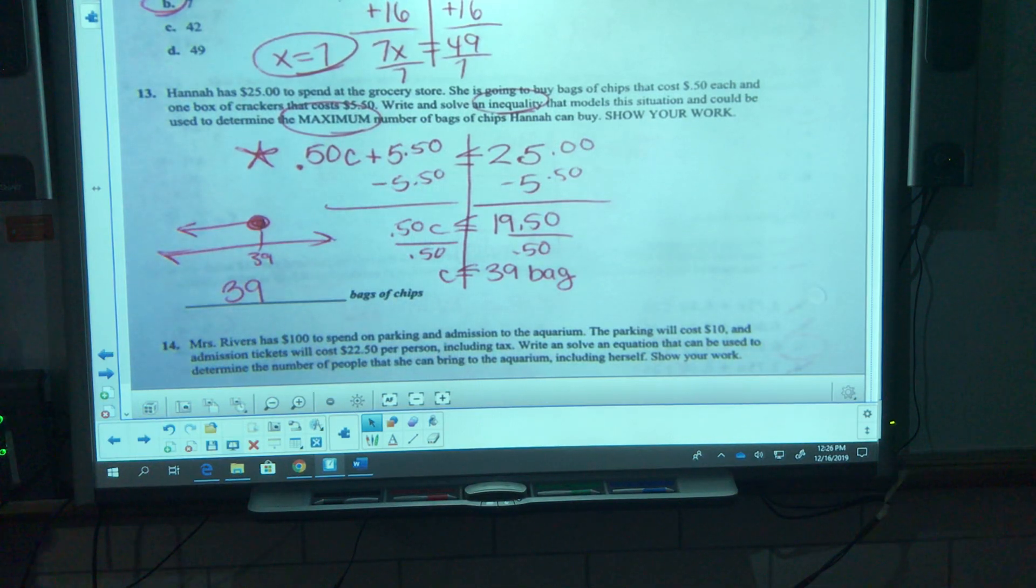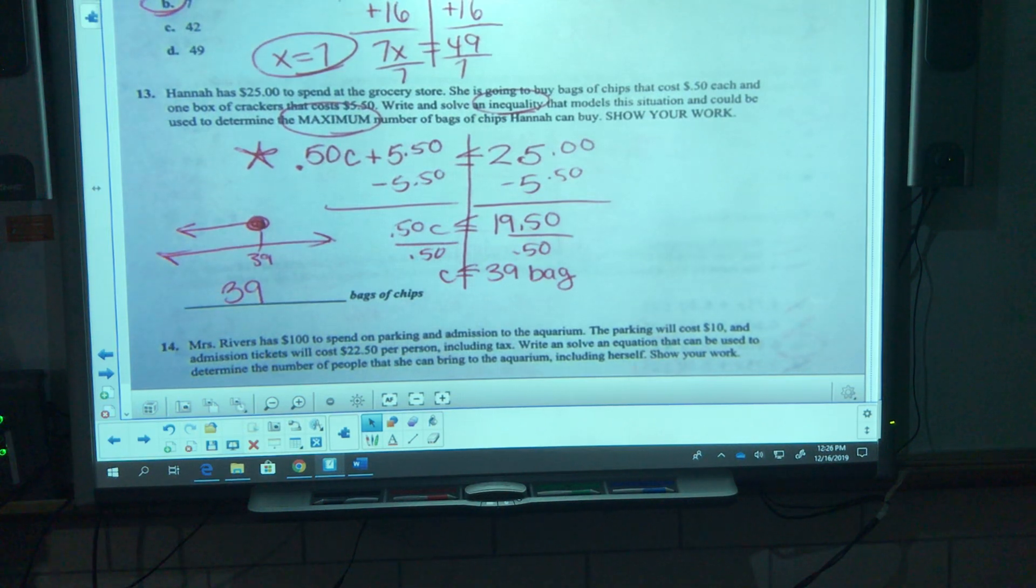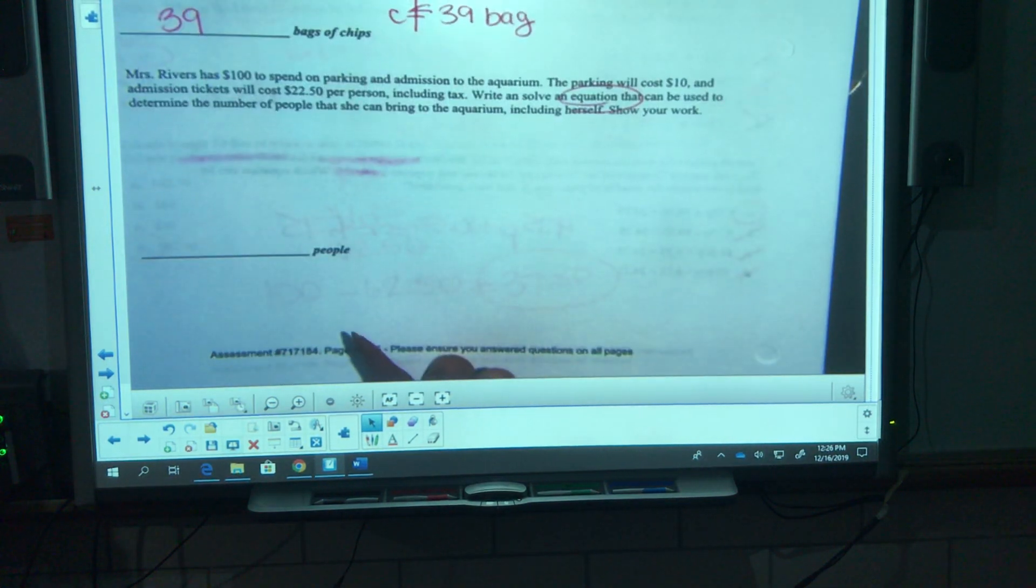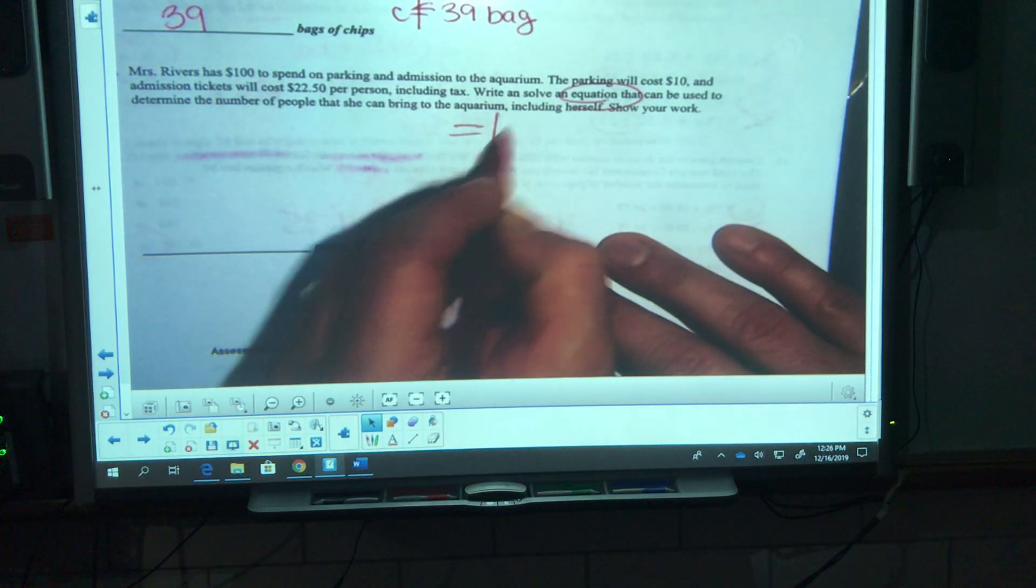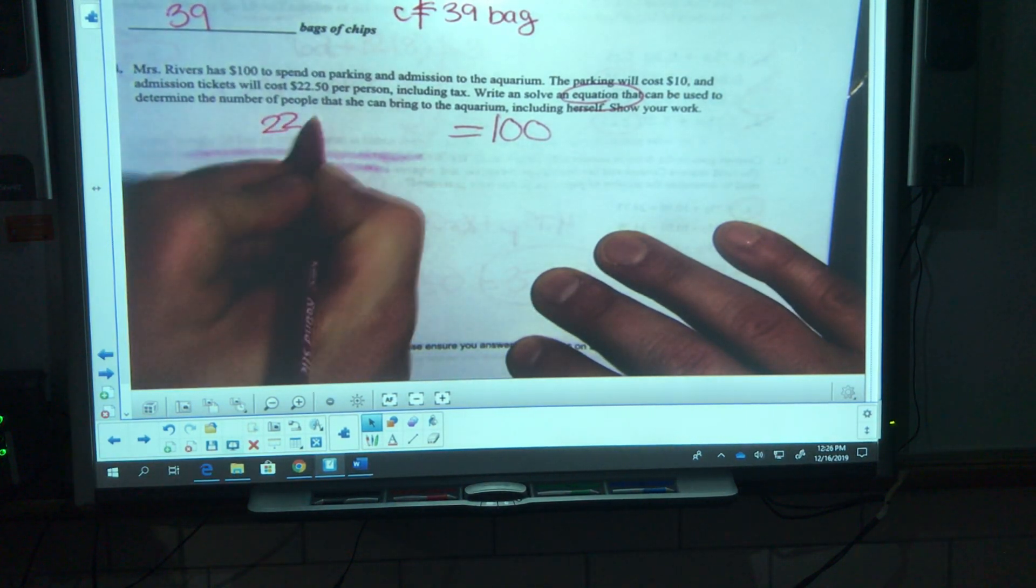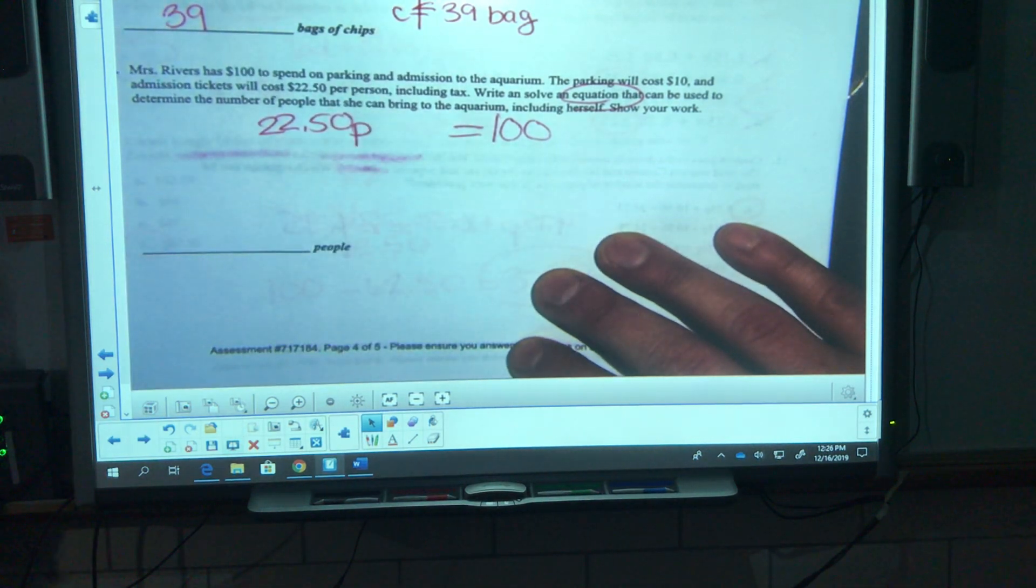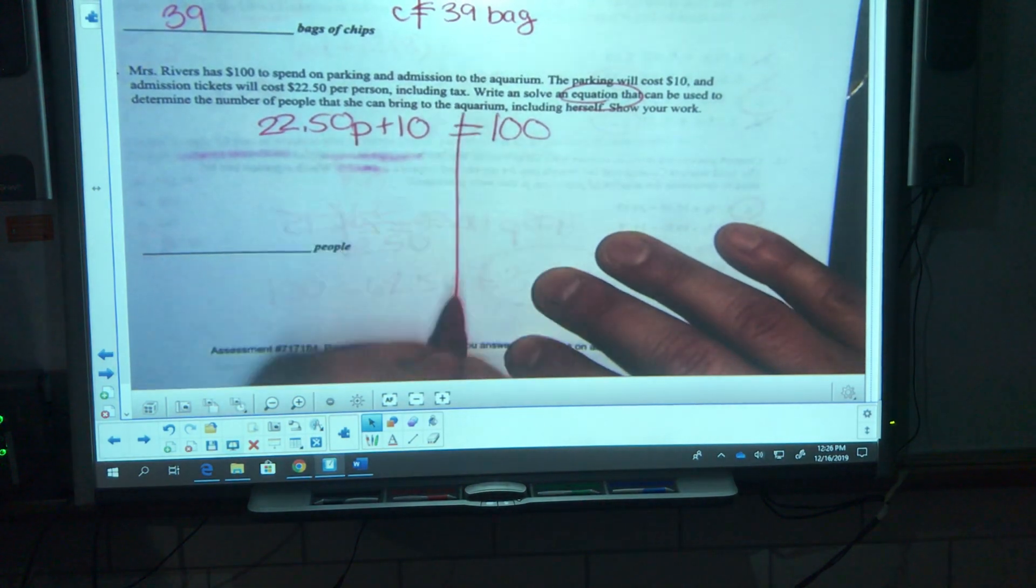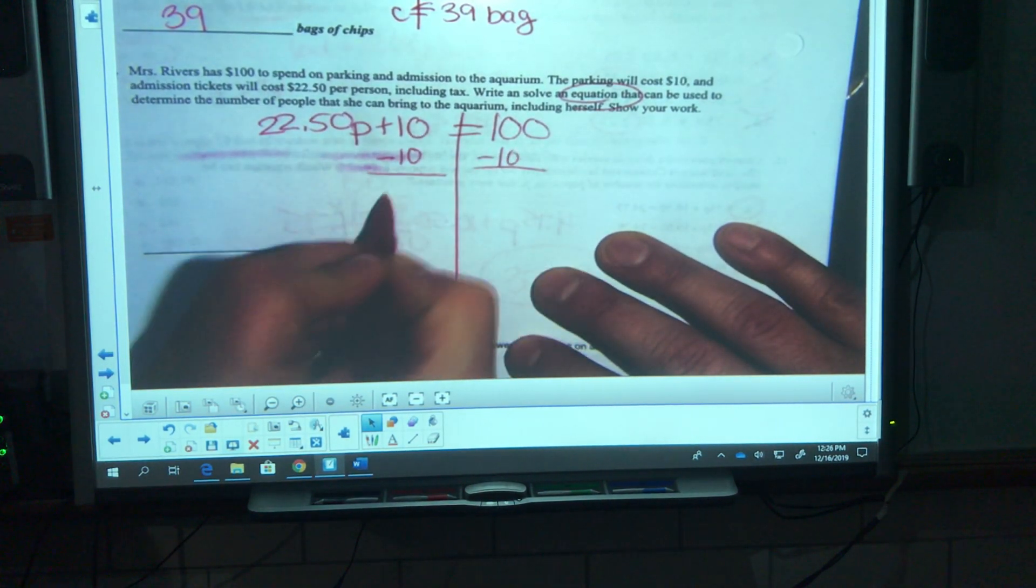Number 14, Mrs. Rivers has a hundred dollars to spend on parking and admission at the aquarium. The parking will cost ten dollars and admission tickets will be 22.50 per person including tax. Write and solve an equation. So this is going to be an equation guys, I'm going to use my equal sign for a hundred dollars that can be used to determine the number of people she can bring to the aquarium including herself. It's 22.50 per person, p is person, plus she's got to pay for the parking.